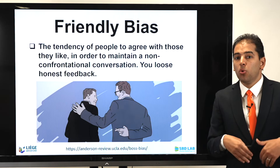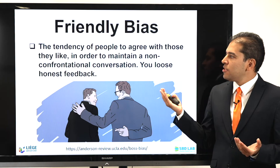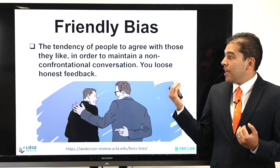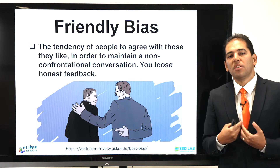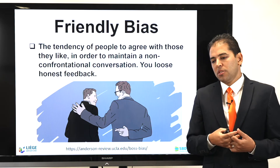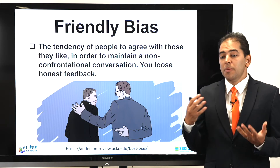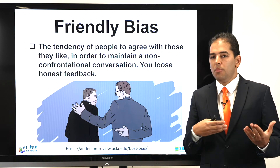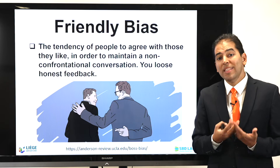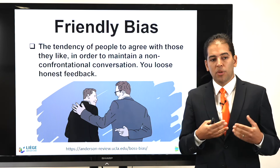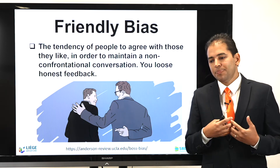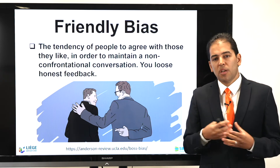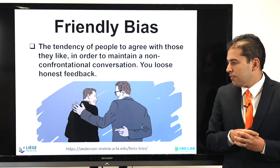The third important bias is called the friendly bias — the tendency of people to agree with those they like in order to maintain a non-confrontational conversation. Here you lose the honest feedback. If you are asking somebody for feedback in a questionnaire or interview, people with this friendly bias will try to avoid confrontation and read your mind to give you answers that please you. This is very dangerous, and when designing your questionnaire or observation technique, you need to be very aware about this friendly bias.